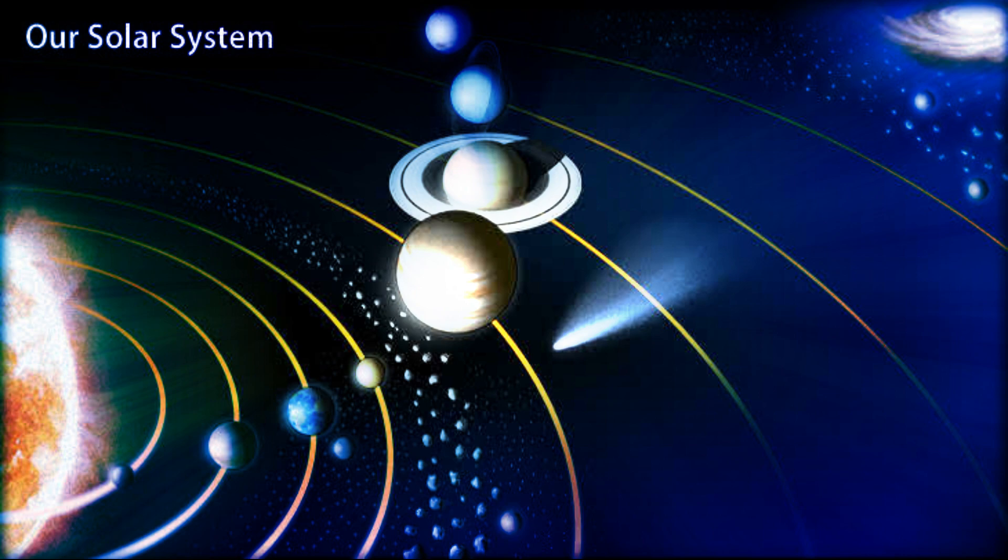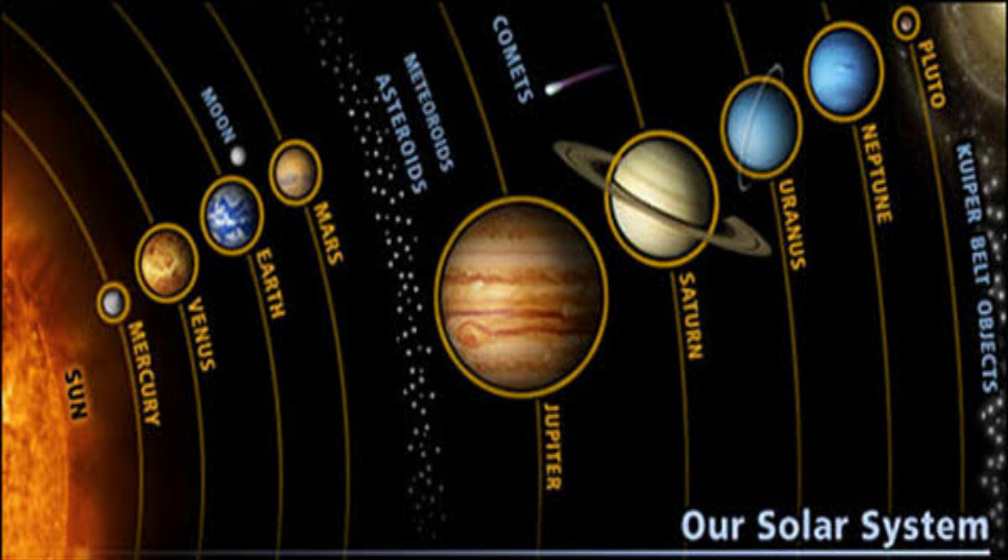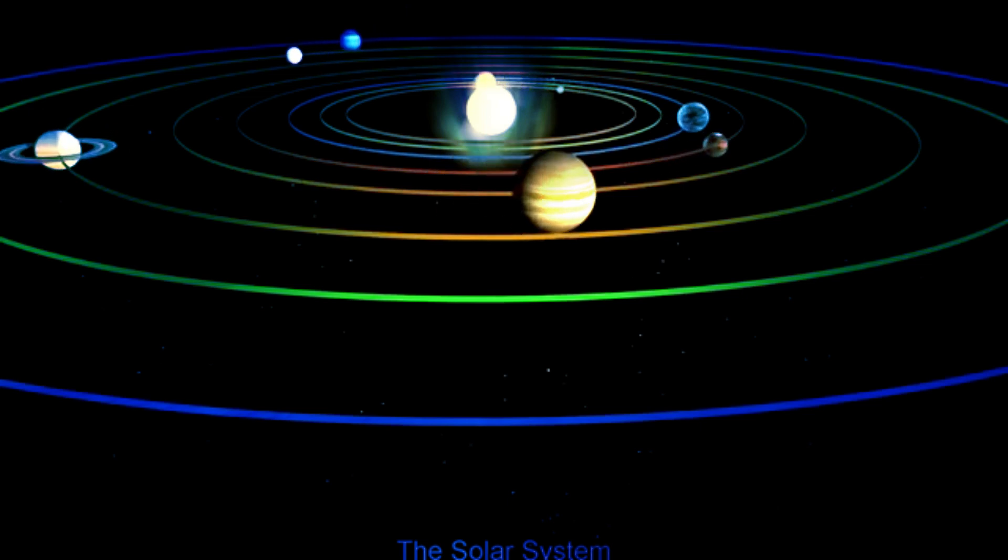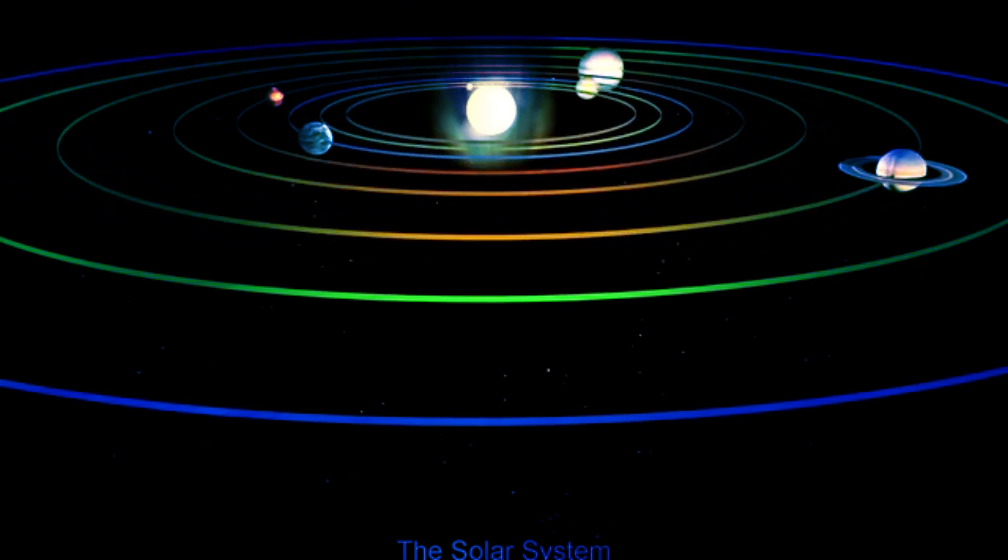Each planet is located far distance from the Sun. Because of this distance each planet takes separate time to complete the revolution around the Sun. For example, Mercury is the planet which is nearest to the Sun. To complete the revolution around the Sun, Mercury takes 88 days.